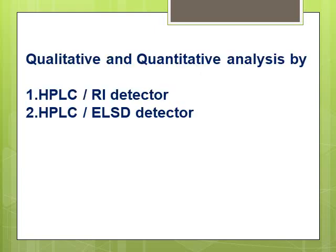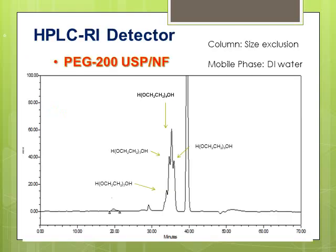For qualitative and quantitative analysis, I'm going to talk about HPLC with RI detector and HPLC with ELSD detector. This is the chromatogram of PEG 200 USP generated using HPLC with an RI detector. The PEG 200 appears as a peak around 35 minutes, and you can see that this chromatogram consists of multiple peaks.